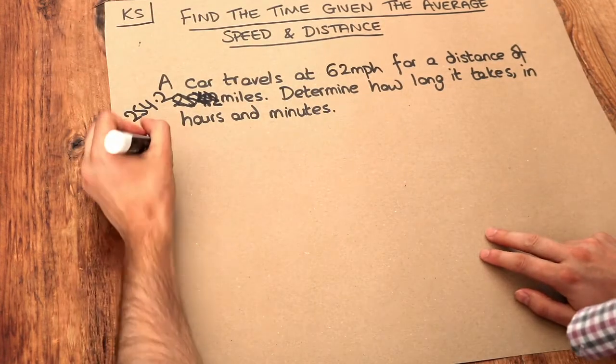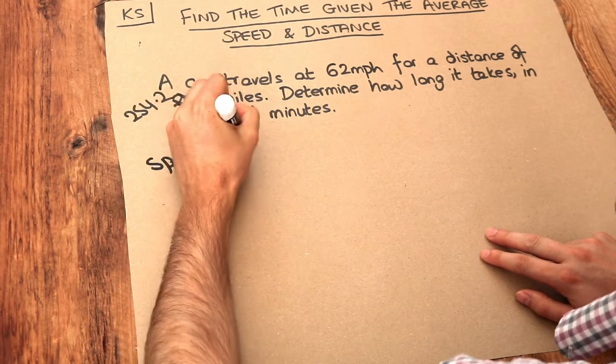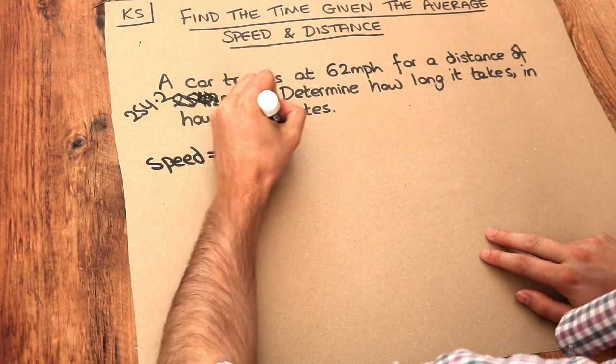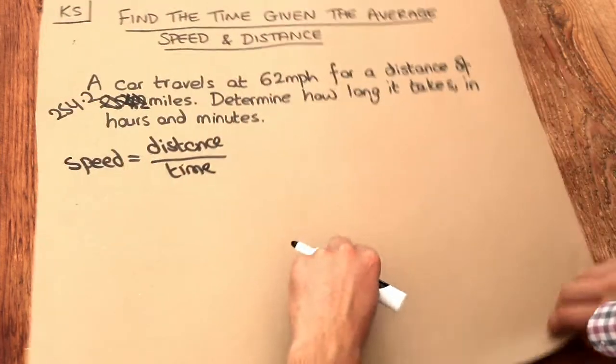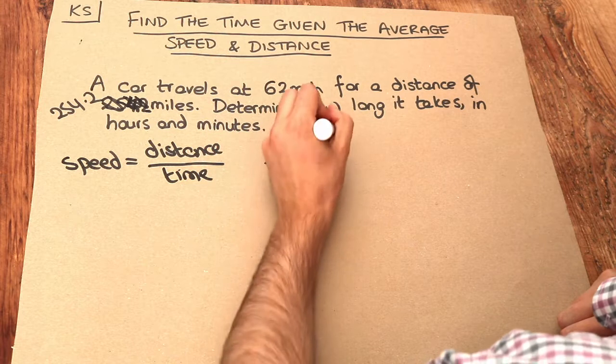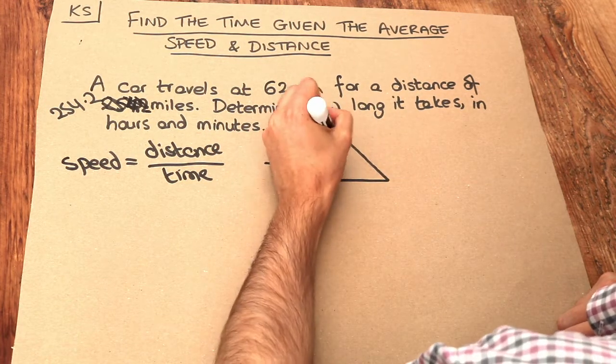Now from the previous video, do you remember that we had this formula: speed is equal to distance over time? That relates speed, distance and time. And we had another way of looking at this which was a speed, distance, time triangle. And that's just a helpful way of looking at this formula.